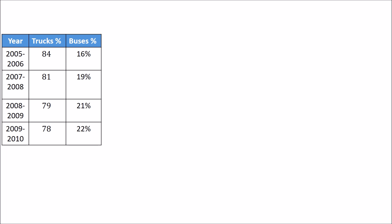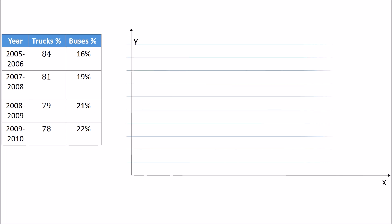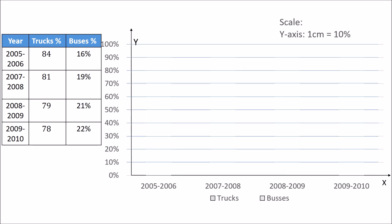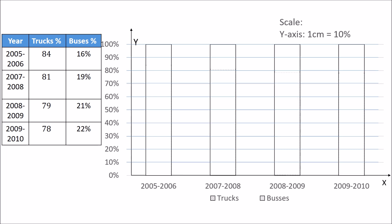Once you have done with the calculation of the percentages, we will now move on to the construction of our graph — the percentage bar diagram. On the x-axis, we represent the year, whereas on the y-axis we represent the percentage from 0 to 100. Our total percentage for any year is always 100, so we will make a bar of 100 each for every year. The percentage of trucks for the year 2005-2006 is 84, so I will mark a line at a height of 84 in the first graph.